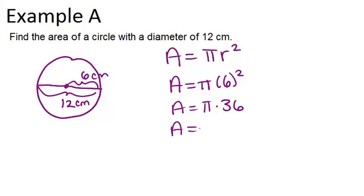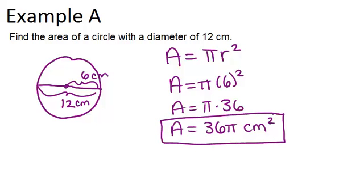I would write it as 36 pi, and then my units are centimeters squared. Remember, if we're working with area, you always need square units, whether it's centimeters, inches, units, or meters. It always has to be squared if you're working with area.